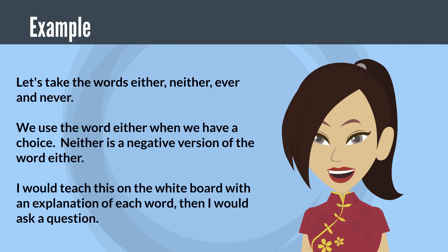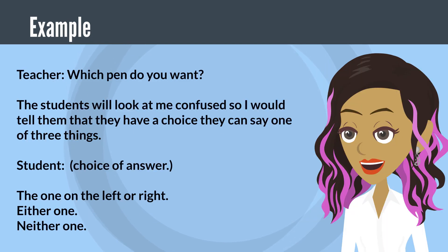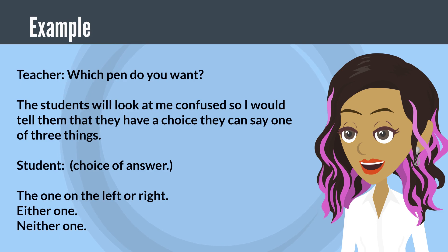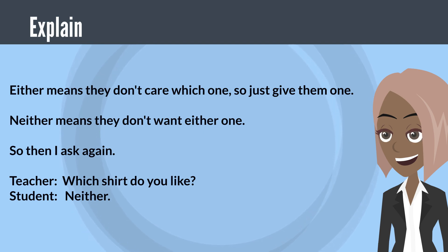Let's take the words either, neither, ever, and never. We use the word either when we have a choice. Neither is a negative version of the word either. I would teach this on the whiteboard with an explanation of each word, then ask a question. Teacher: which pen do you want? The students will look confused, so I would tell them they have a choice and can say one of three things. Student: the one on the left or right, either one, or neither one. Either means they don't care which one, so just give them one. Neither means they don't want either one.